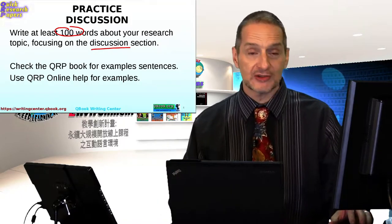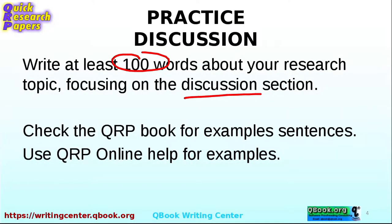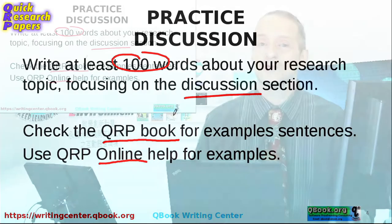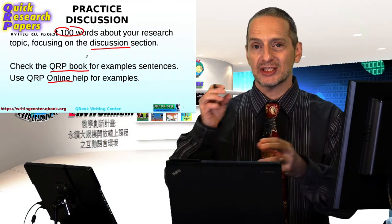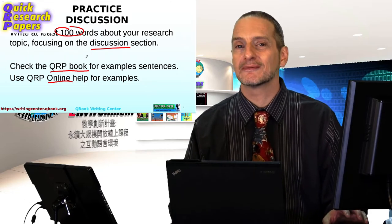Remember, use your QRP software and there's online help with your QRP software — that little yellow box that's right next to where you're writing. You can also use the QRP e-book to get example sentences. It's always a great idea to use example sentences and change them to match exactly what you're doing.